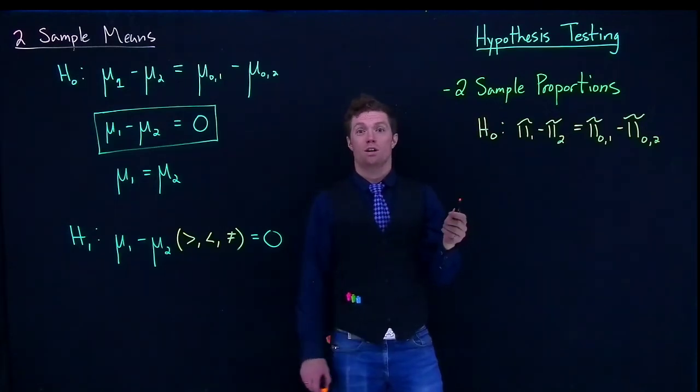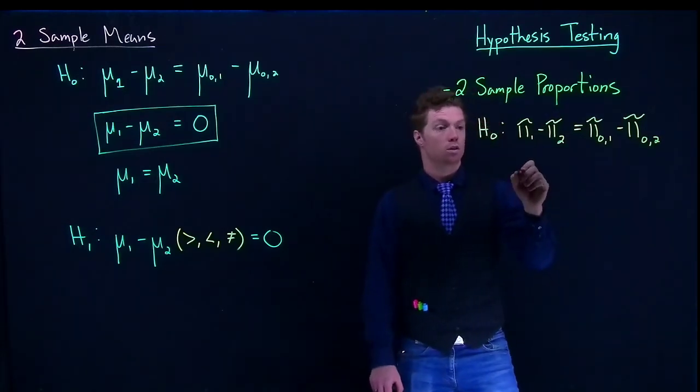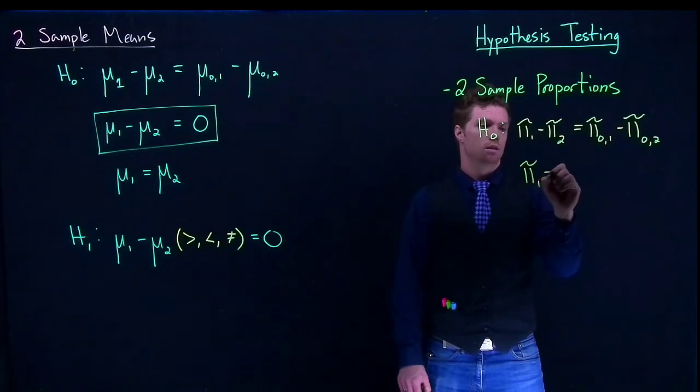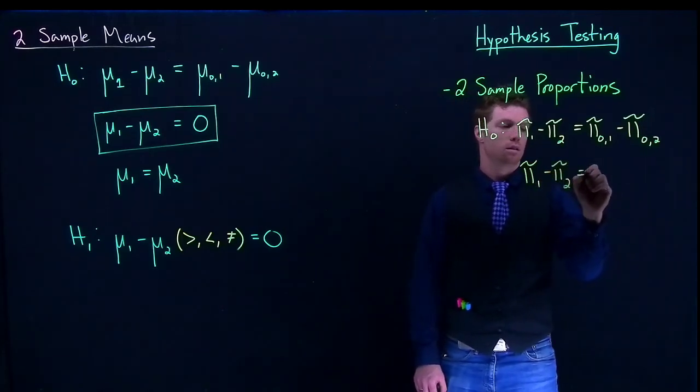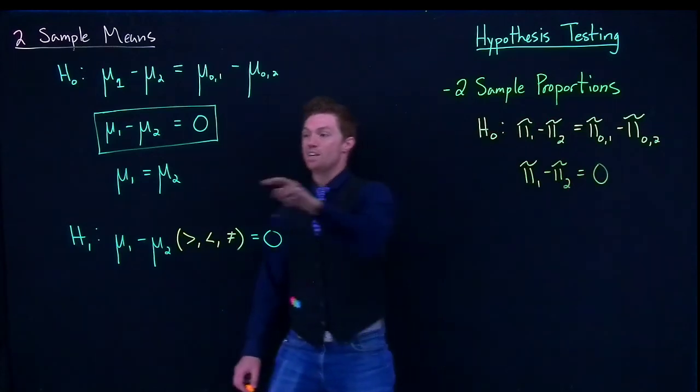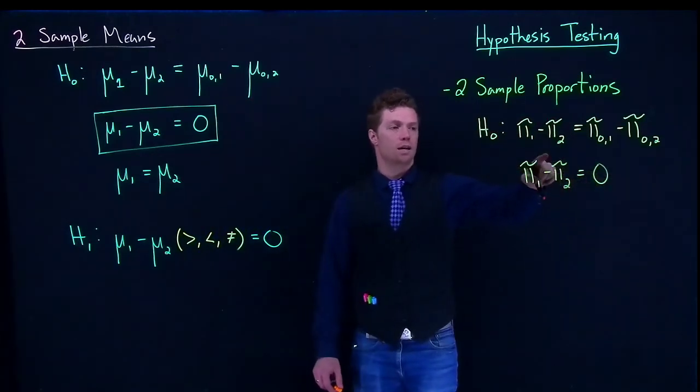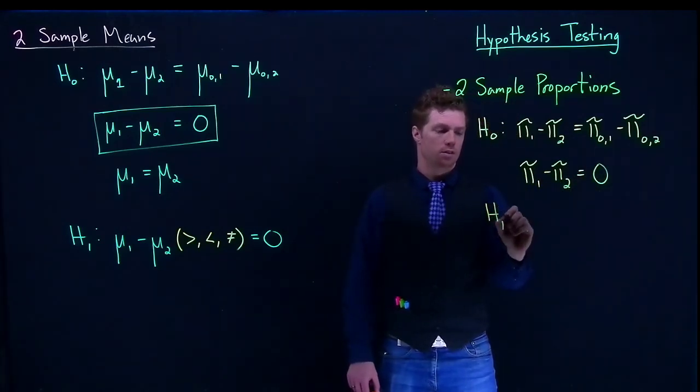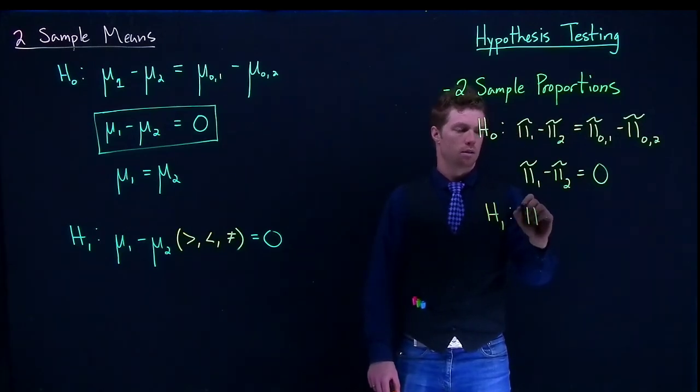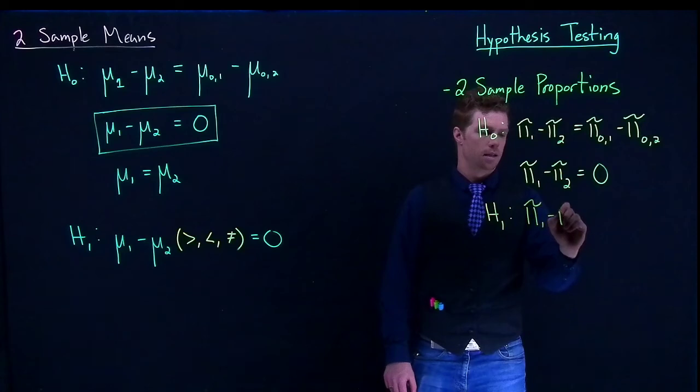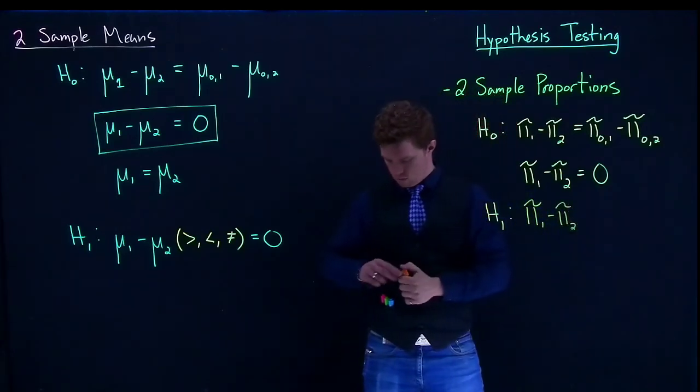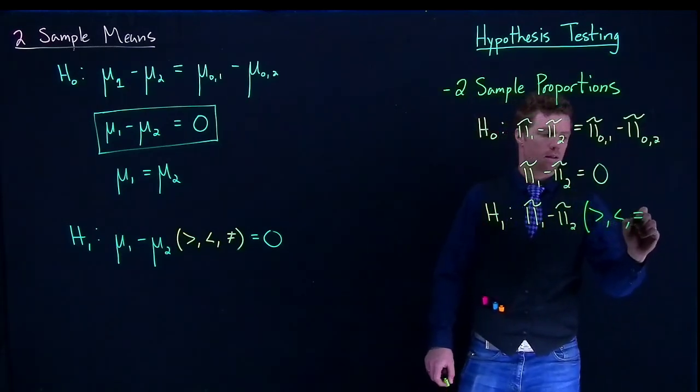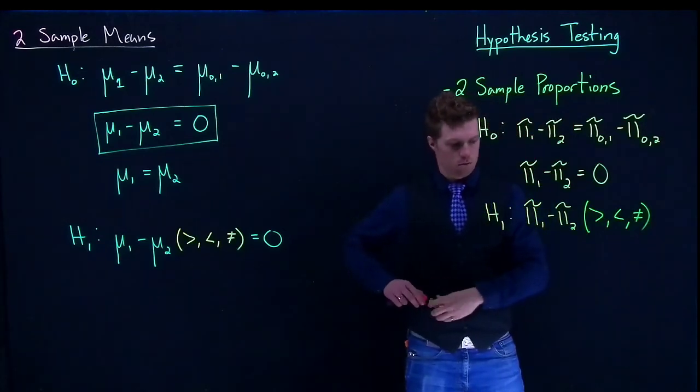Once again, most of the time we are comparing these to say that we are trying to see if they are equal, that the baseline assumption is that they are equal to one another. We can do this thing again where we put the pi two on the other side, but I like this format, so I want to keep it just like this. And our alternative hypothesis is going to be pi one minus pi two greater than, less than, not equal to zero.